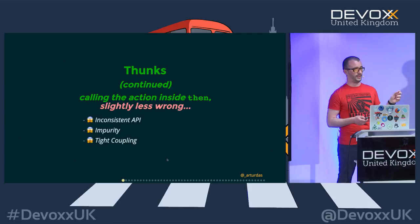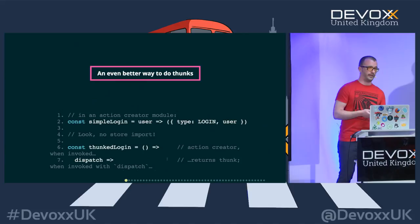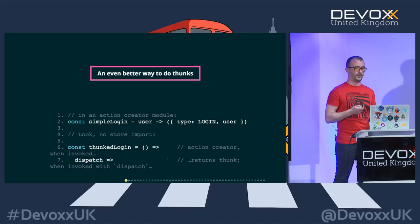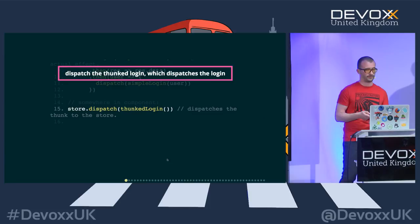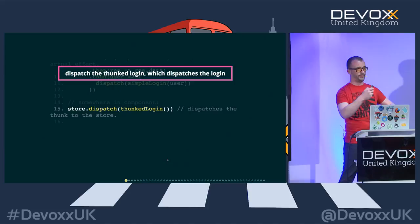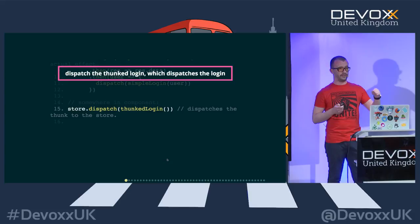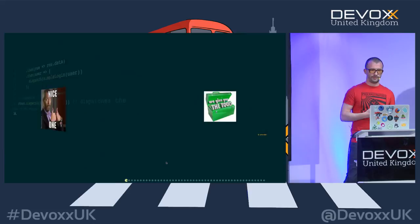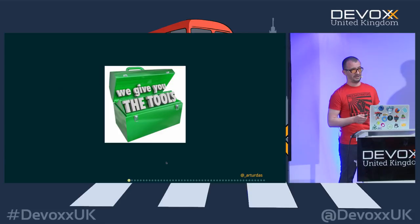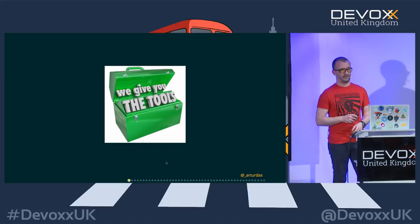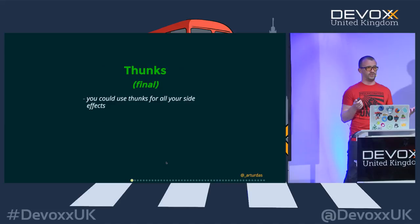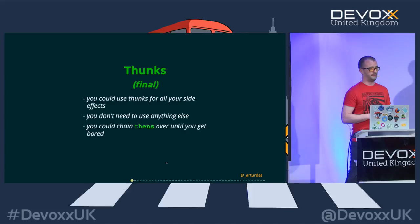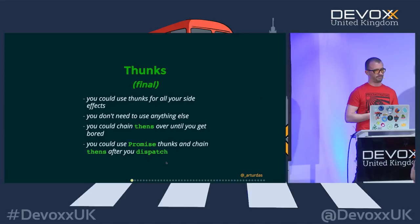It would also be tightly coupled to the store. The preferred way to do thunk dispatches is by injecting the dispatch function into the thunk, and then calling the store dispatch with that thunk. You see the lazy evaluation of the function — you build up the payload and pass it on to the store, handled in the thunk middleware. With this, you have all the tools required to handle asynchronous requests.